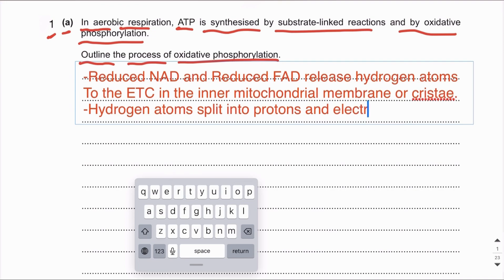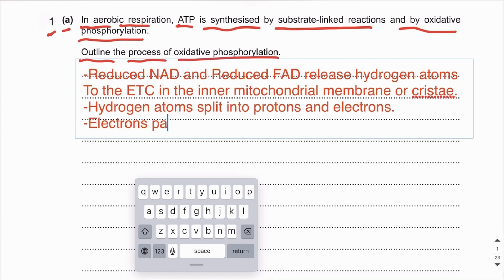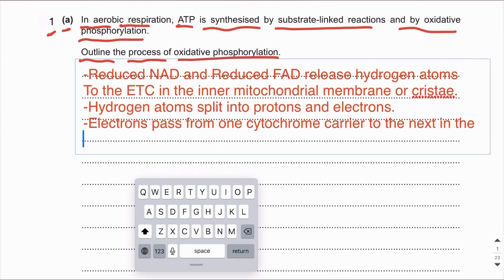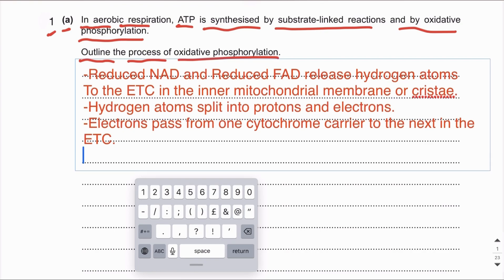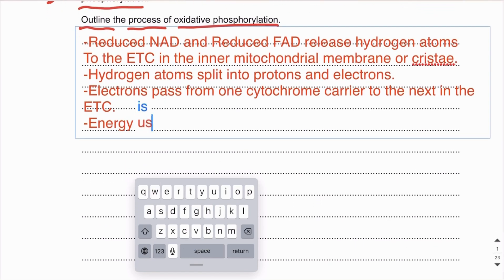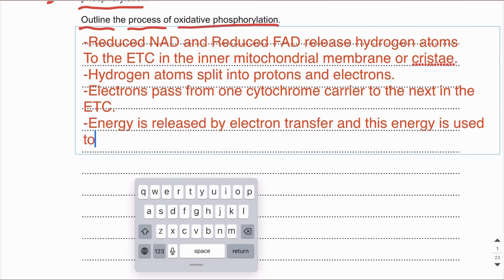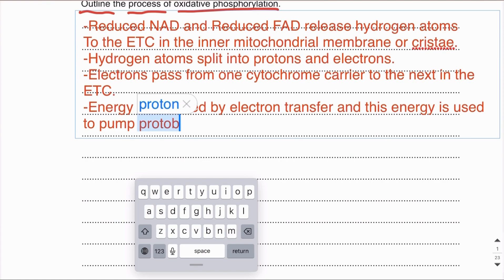These hydrogen atoms split into protons and electrons. The electrons are then transferred from one carrier to the next — from one cytochrome carrier to the next — in the electron transport chain. The ETC contains cytochrome carriers, also called electron carriers.